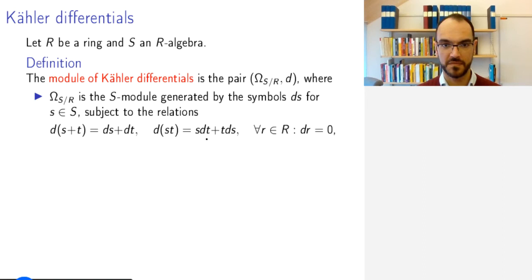These relations say that this association D is additive, satisfies the product rule for multiplication or the Leibniz rule, and if you take some a from your R ring, then da equals 0.